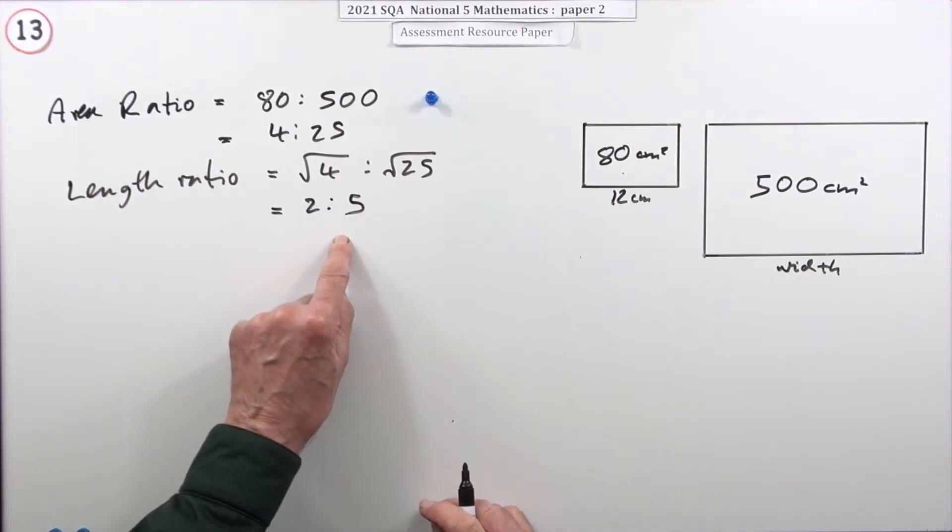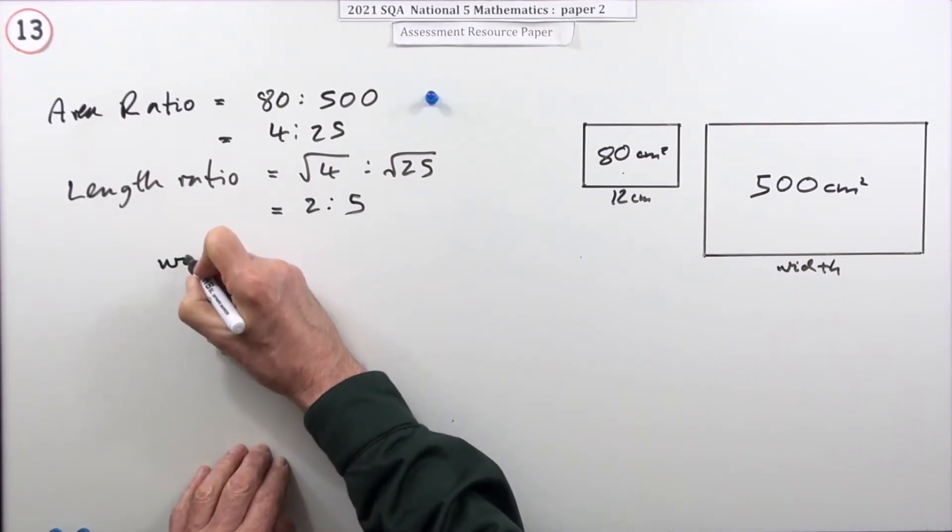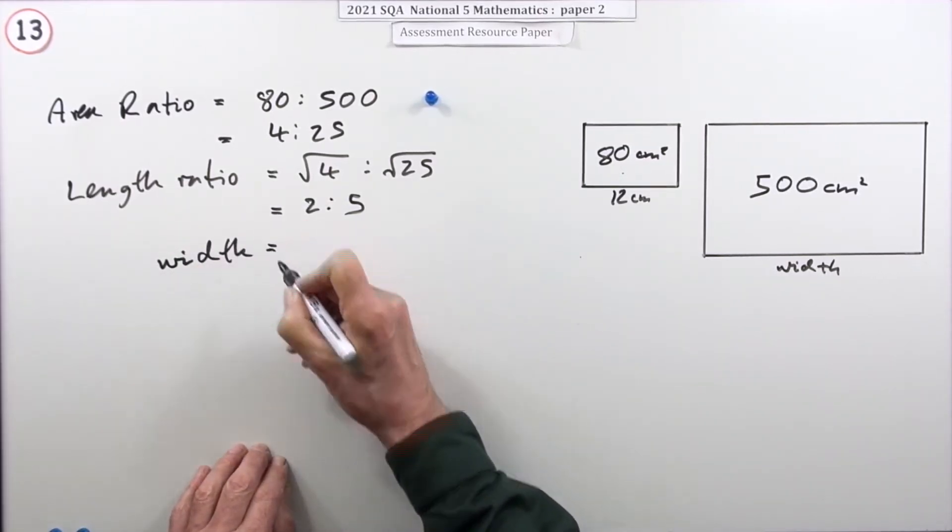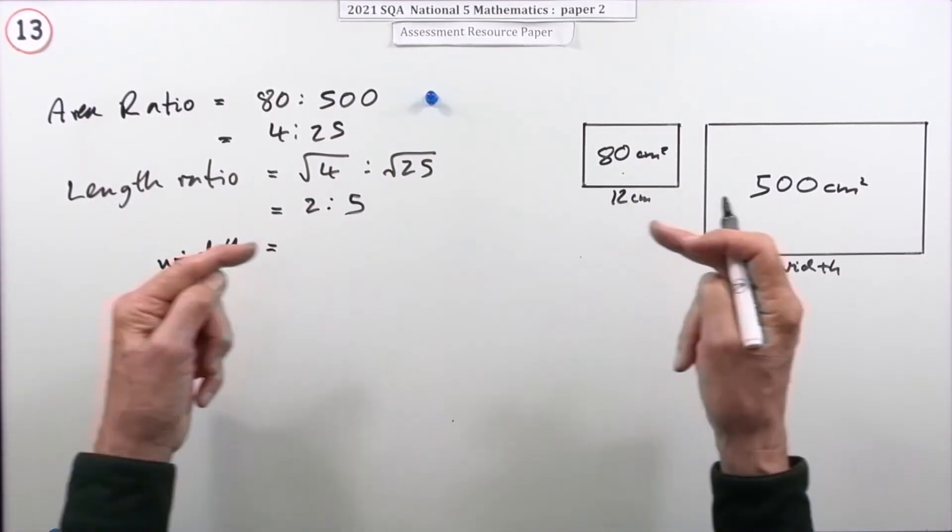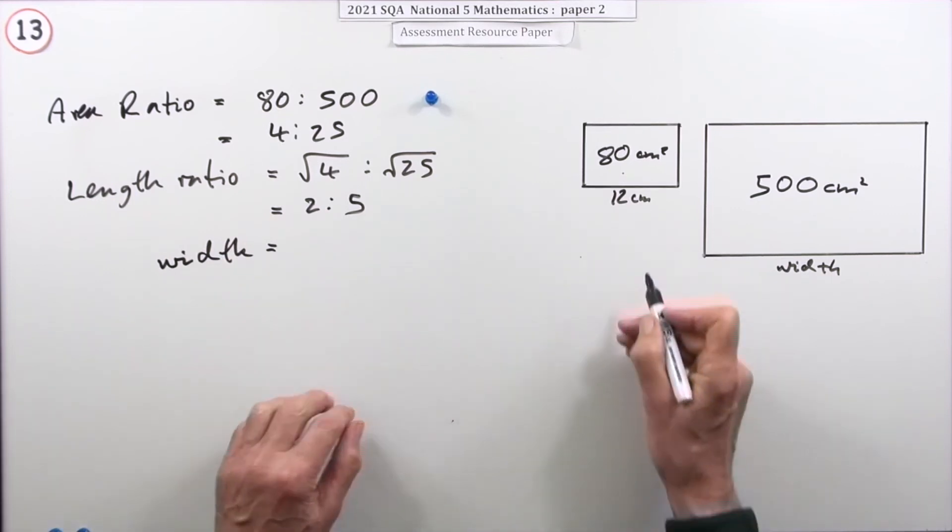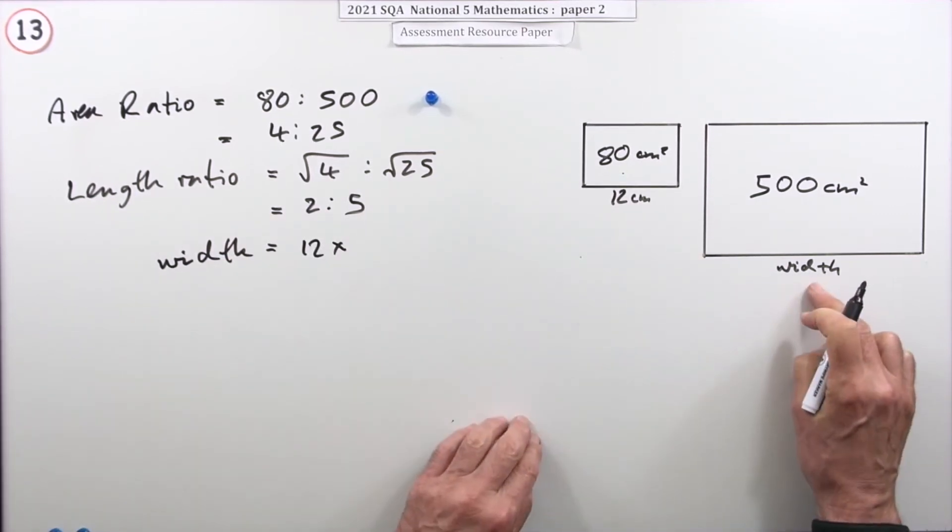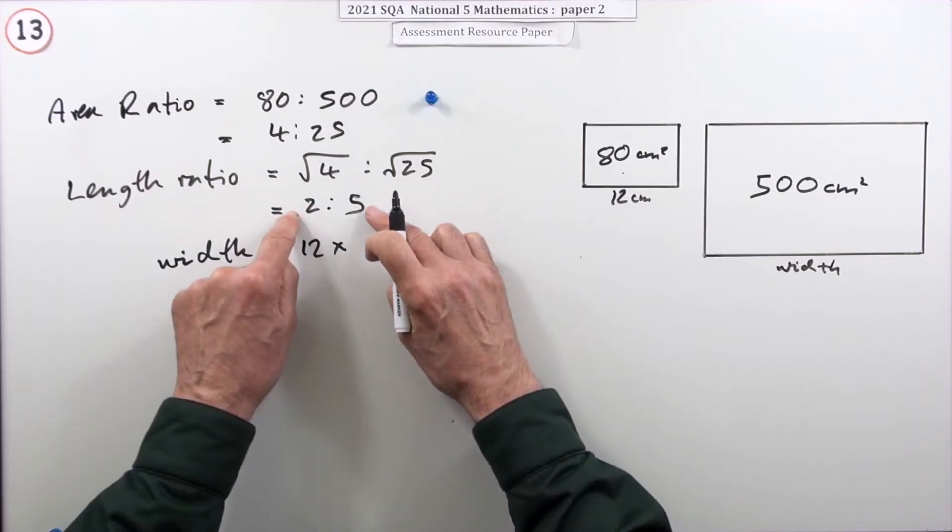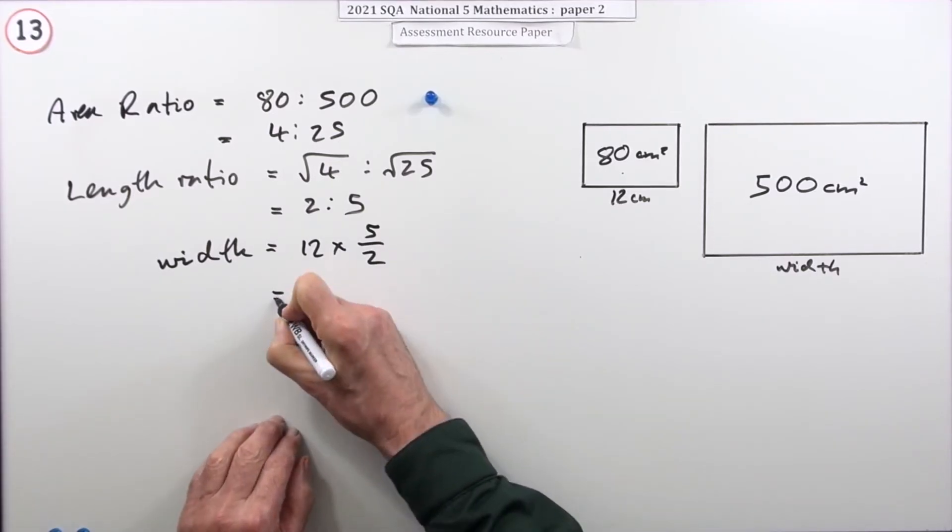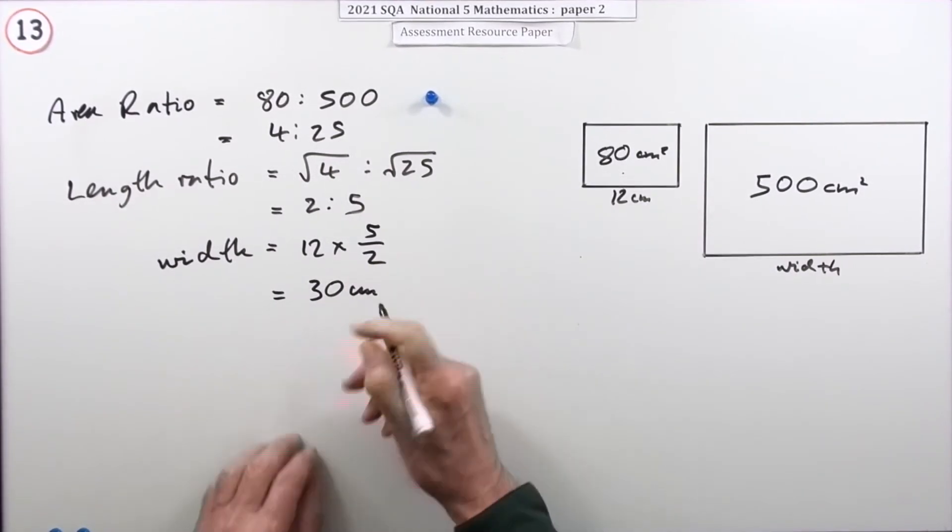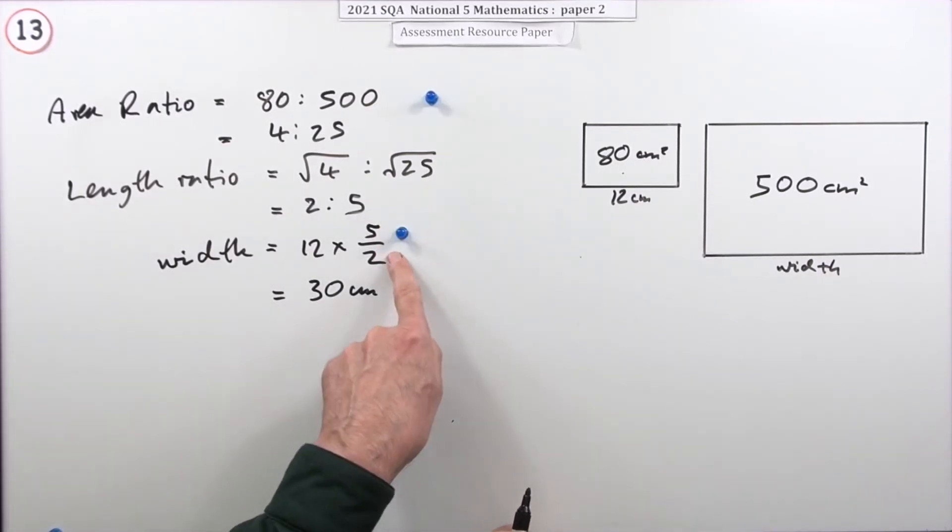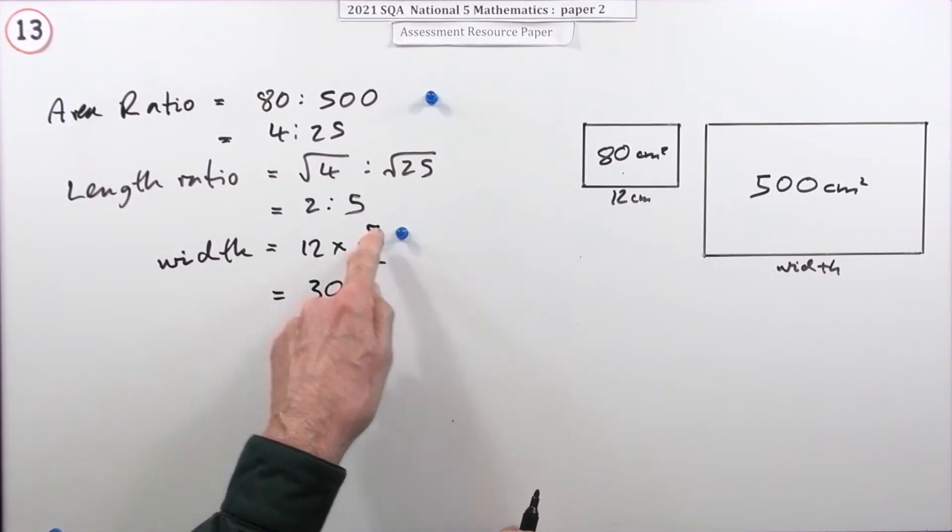There's no mark for that specifically - the mark didn't come until you started the calculation. Now what is the width? That ratio gives me the scale factors both ways. If that's 12 and this is meant to be bigger, I'll put the 5 on top and the 2 underneath so it goes 12 times 5 over 2 equals 30 centimeters. One mark for using the appropriate scale factor with the larger number on top, one mark for the answer.